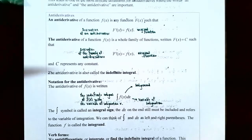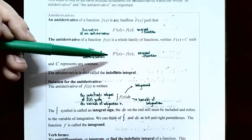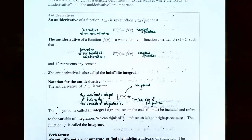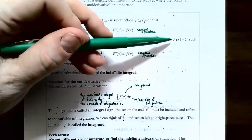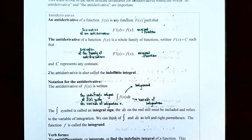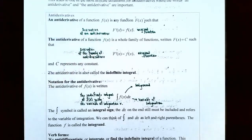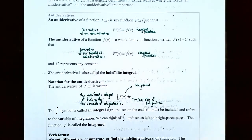On the other hand, the antiderivative of a function f of x is a whole family of functions written as capital F of x plus c, such that if you take the derivative of the family of antiderivatives — capital F prime of x — you get the original function back, lowercase f of x. The family of antiderivatives is represented as capital F of x plus c, where c is a constant number.